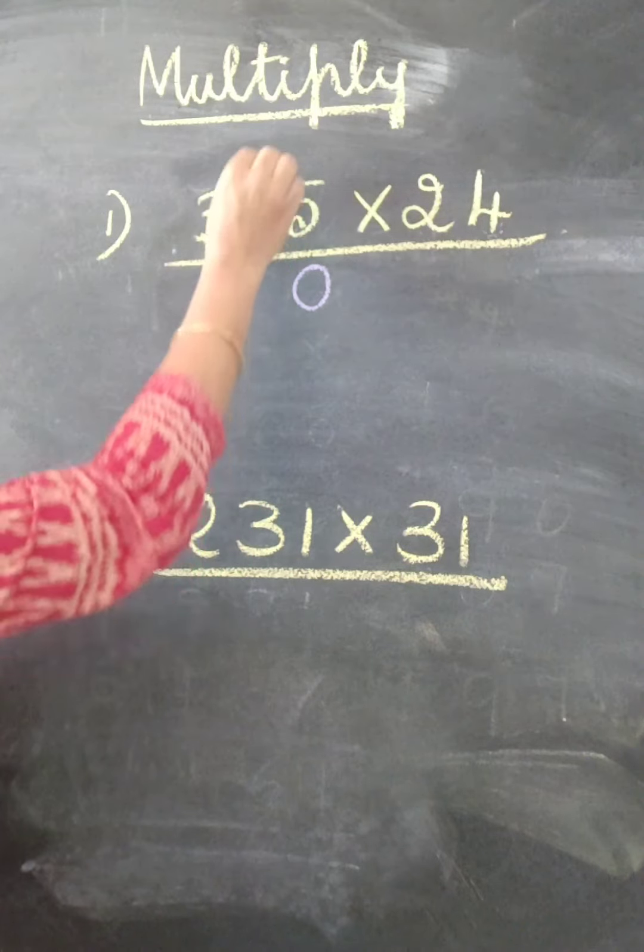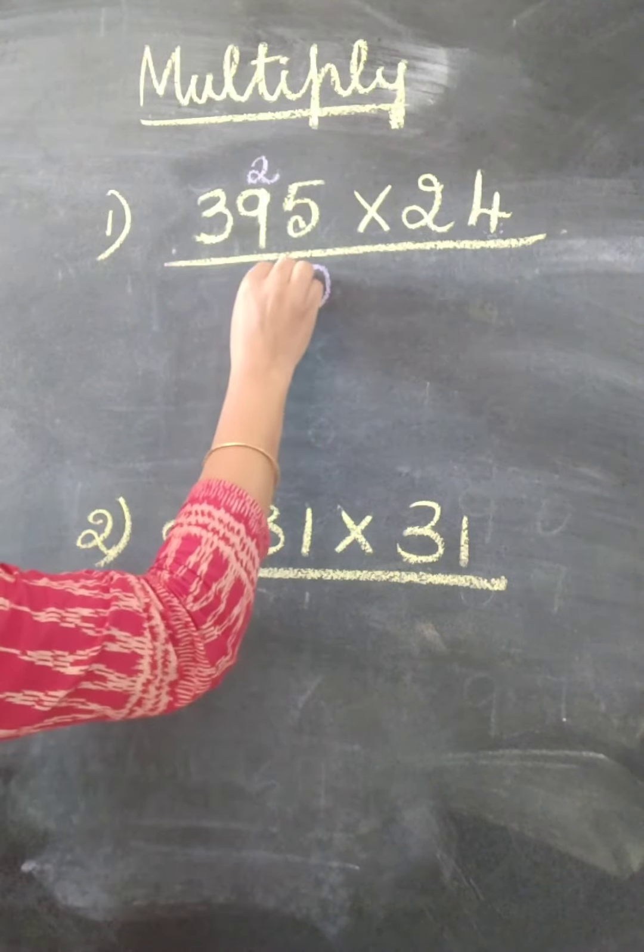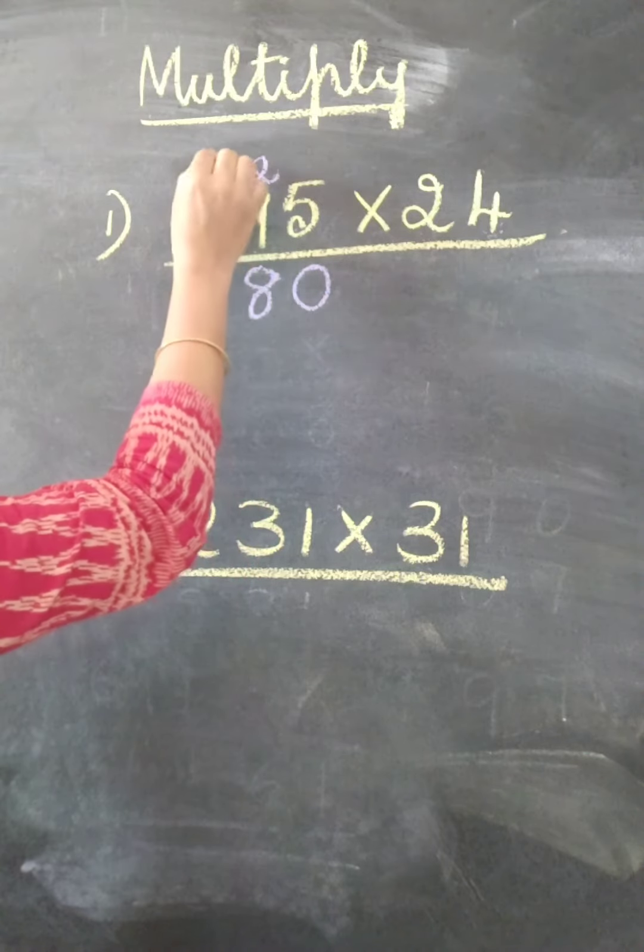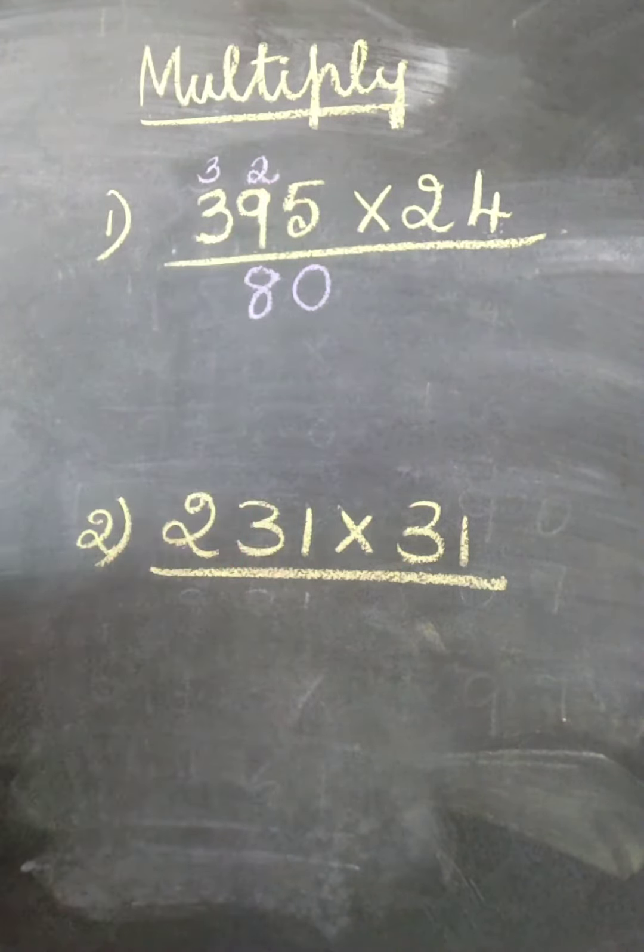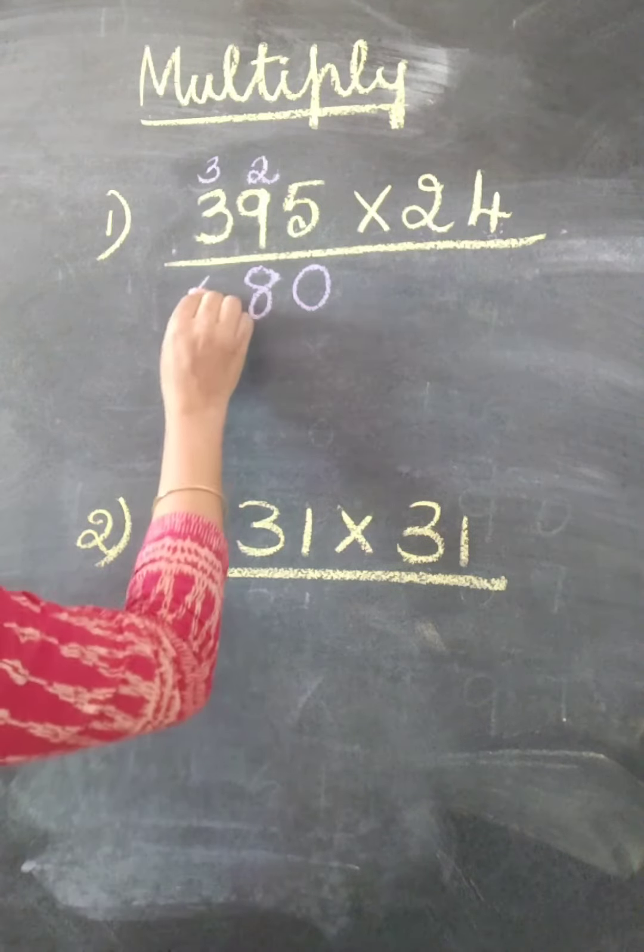It's 36 plus 2. 38. Write 8 here, 3 you may carry to the next place. 4 times 3 is 12 plus 3. 15.